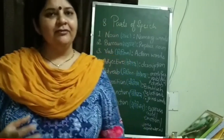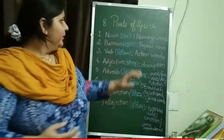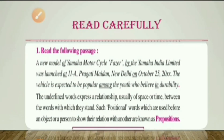Or this may be an abstract noun — for example, 'I am feeling sadness today.' No one can pay money to buy happiness, so happiness and sadness are names of feelings and emotions. So all these are different kinds of nouns. Now read the following passage: 'A new model of Yamaha motorcycle, Fazer, by Yamaha India Limited, was launched at Hall 11A, Pragati Maidan, New Delhi, on October 25th, 2020.'